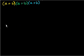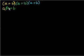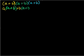Let's do this using the distributive property. This equals a times (a + b) — going back in green — plus b times (a + b), and then all of that times (a + b) again.